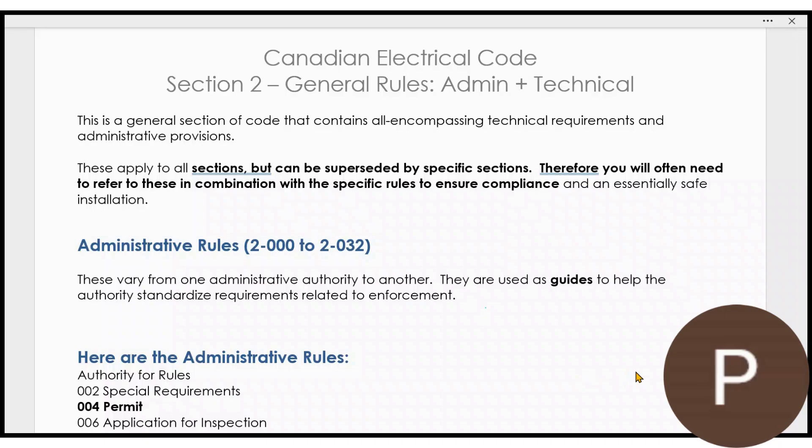The Canadian Electrical Code, Section 2, covers general rules — both administrative rules and technical rules. It's a section of the code that has all these all-encompassing requirements that can be superseded by specific sections, but they intend to apply to all sections unless they get superseded by a specific section.